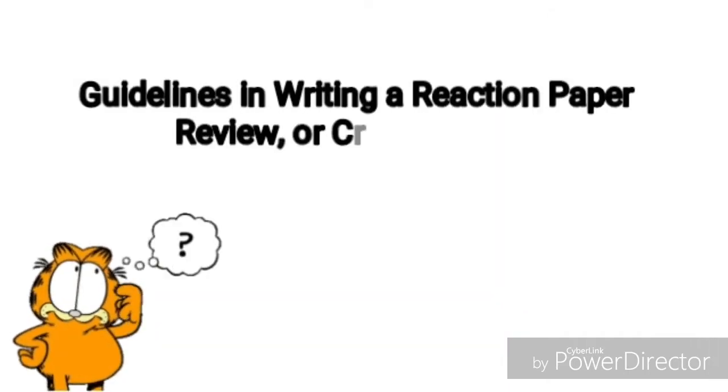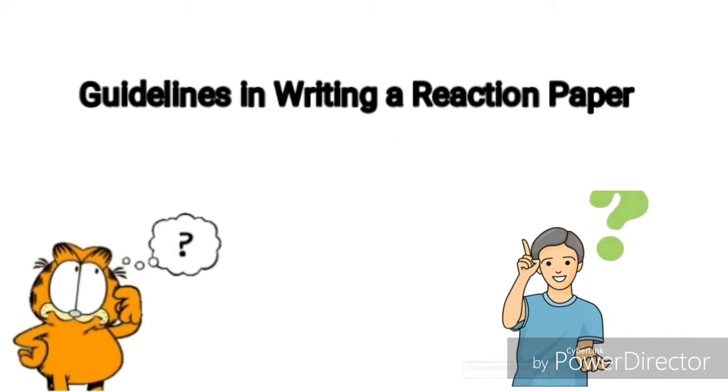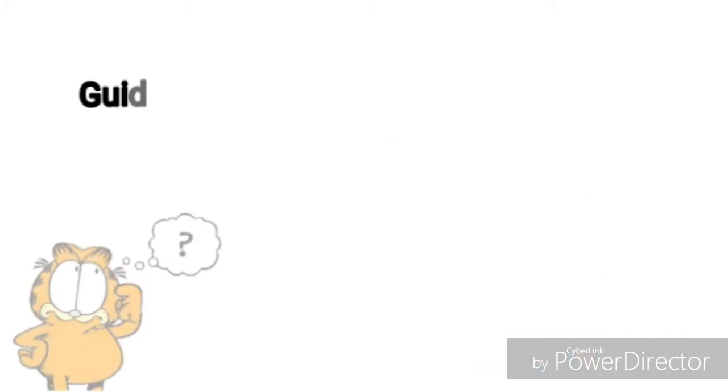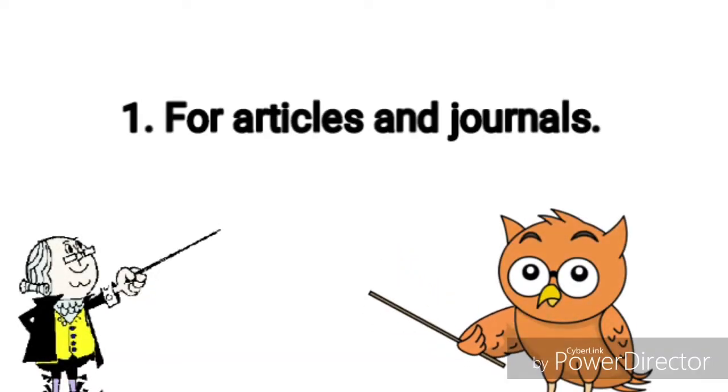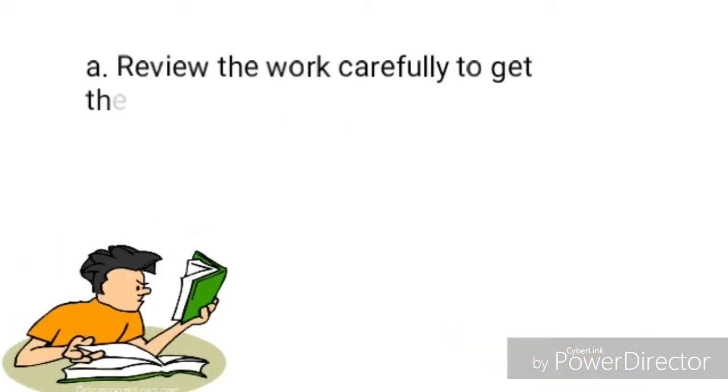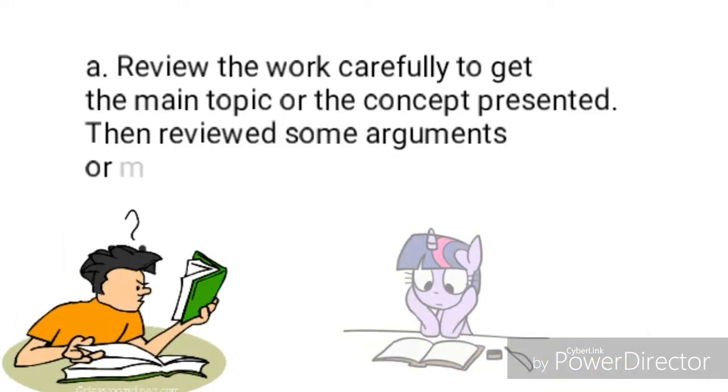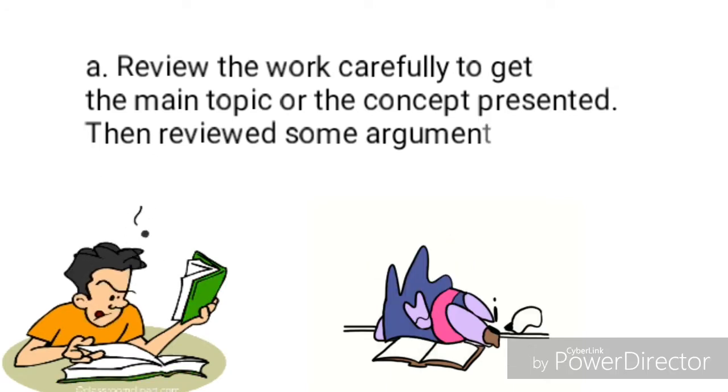Guidelines on Writing a Reaction Paper, Review, or Critic. Number 1: For Articles and Journals. First, review the work carefully to get the main topic or the concept presented, then review some arguments or message.